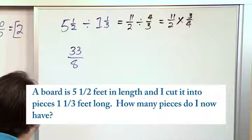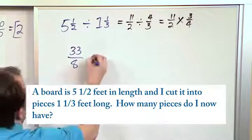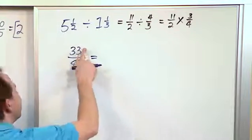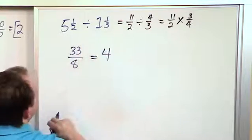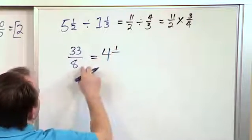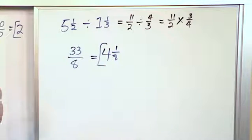So that is the answer, but it's improper, so let's convert it. Eight times two is sixteen. Eight times three is twenty-four. Eight times four is thirty-two. So this can go four times. Thirty-two and thirty-three—the difference is a remainder of one over eight. So the answer is 4⅛.